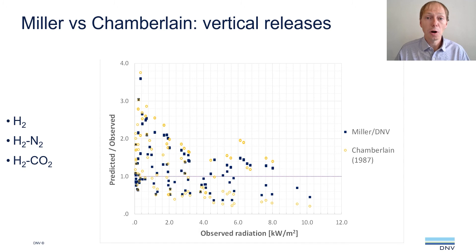Moving on from horizontal to vertical jet fires, again focusing on hydrogen and hydrogen mixtures with nitrogen and CO2, we compare the updated Miller model with the Chamberlain model. There is much more scatter in the data for vertical releases than for horizontal releases, but again the updated Miller model tends to give better predictions than the Chamberlain model throughout the range of experimental data. So for these low-luminosity gases, the Miller model provides an improvement compared to the Chamberlain model, which is often used for vertical jet fires.